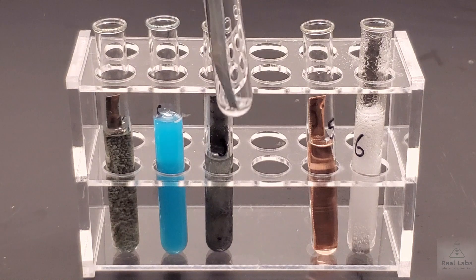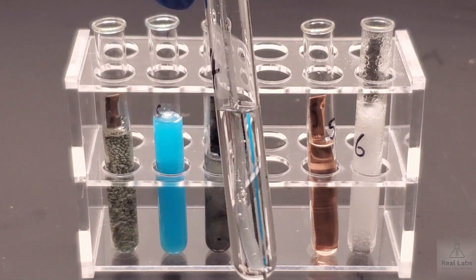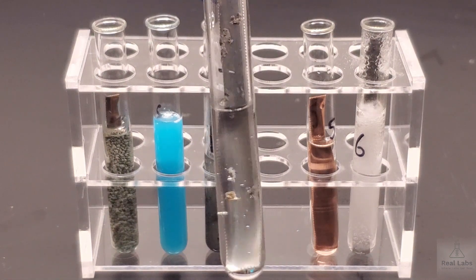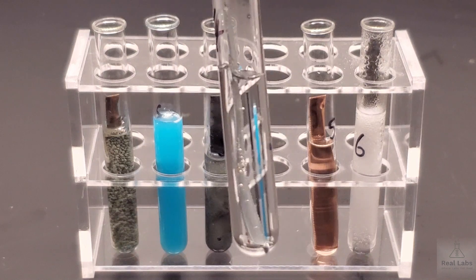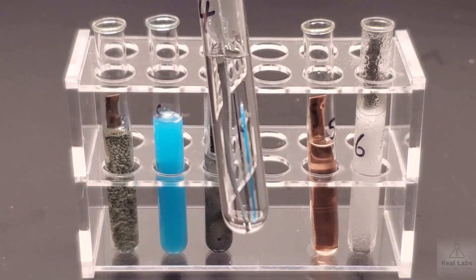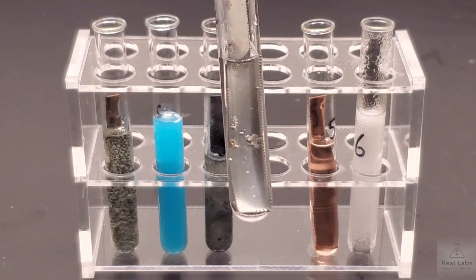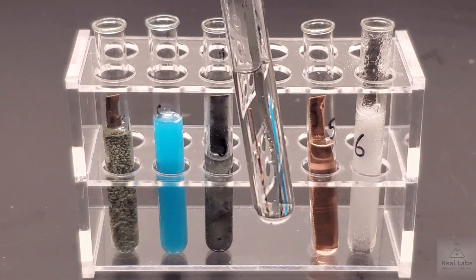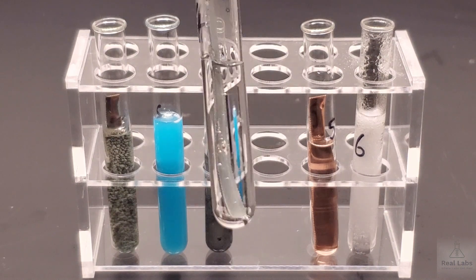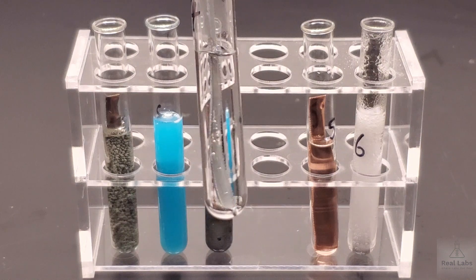In the fourth test tube here, we have the zinc strip with magnesium sulfate. You can make your observations. If you think something's happened, explain what you see, what you think you see has happened. If not, you can say there's no reaction or there was no change in the system. That's how you would note if you think there's nothing happening.